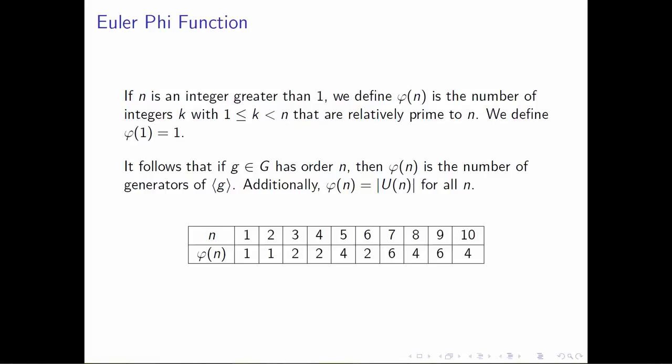I've listed the first handful of values in a table, with n in the first row and phi of n in the second row. So you can see some nice things happening. By convention, phi of 1 is 1. Phi of 2 is 1. And then you can go on and do some computations to check that these are all correct.